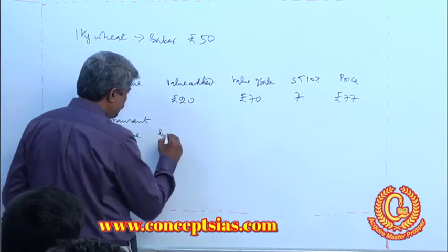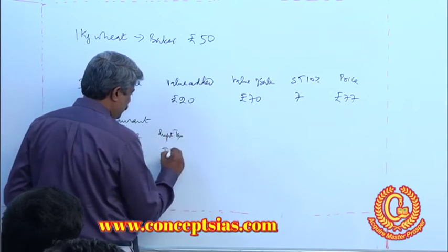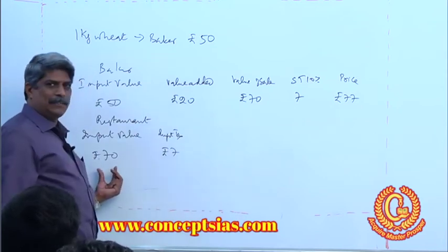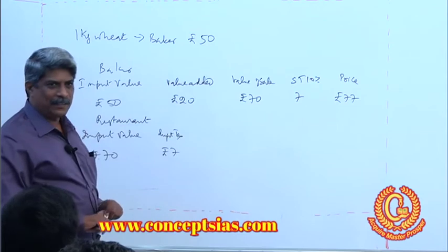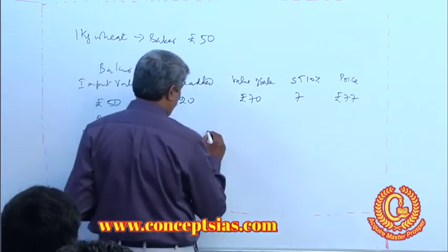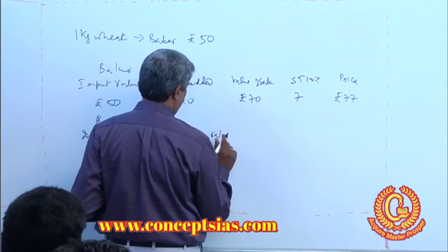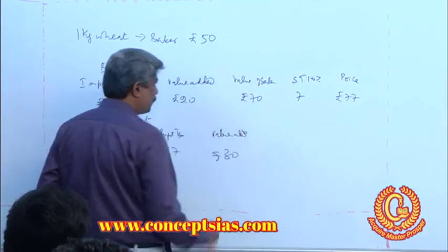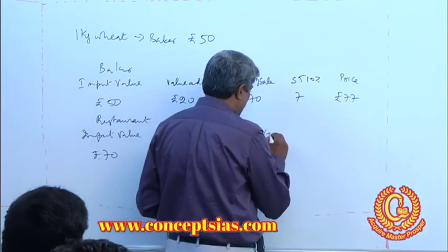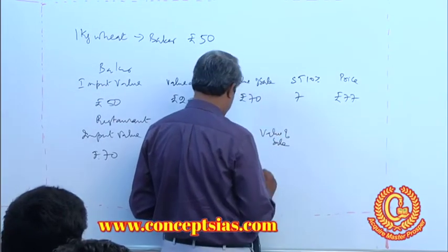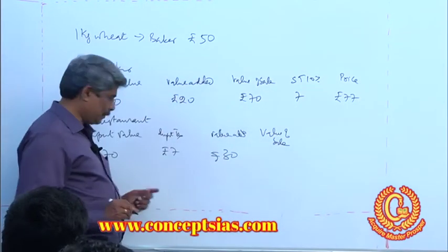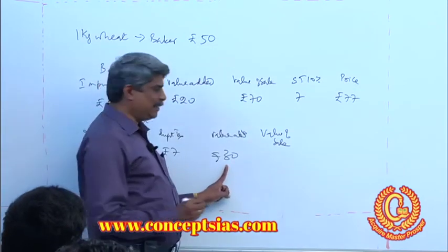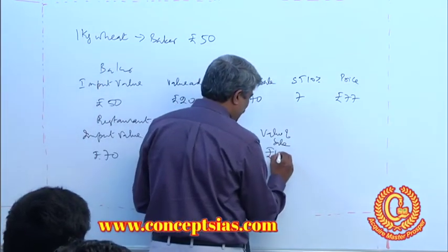The input tax is 7 rupees. Now the restaurant has converted this bread into a sandwich and sells it for 100 rupees. The input value is 70, and he has added a value of 30, so the value of sale is 100.